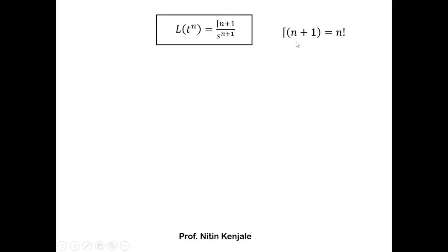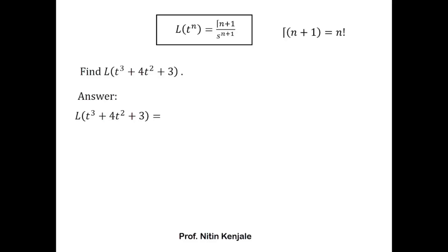We can replace Γ(n+1) by n factorial whenever n+1 is a positive integer. Now let's see an example: find the Laplace transform of the polynomial t³ + 4t² + 3. Using the linearity property of Laplace transformation, we apply the Laplace operator to every term: L{t³} + 4·L{t²} + L{3}.